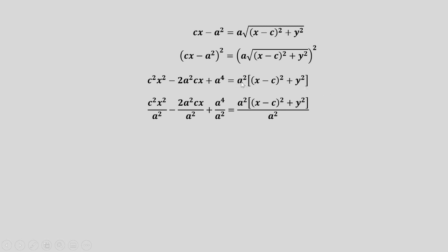Dividing all the terms by a squared gives us this. Notice that this would be cancelled. A raised to 4 over a squared would be a squared, and this would be cancelled. Performing square of a binomial for this part gives us this. We can cancel some of the terms, leaving us this equation.